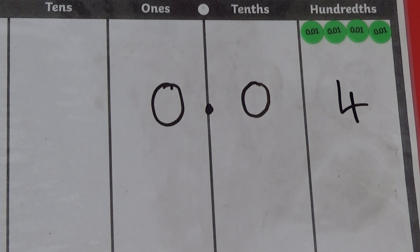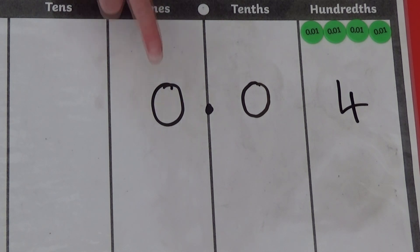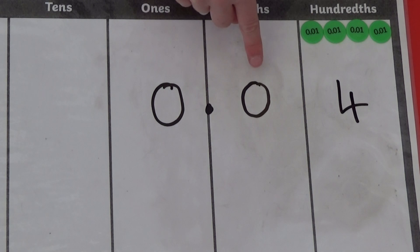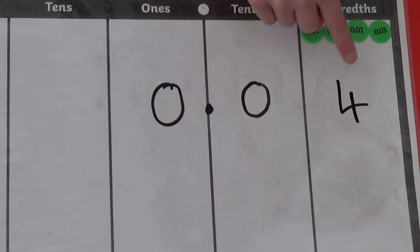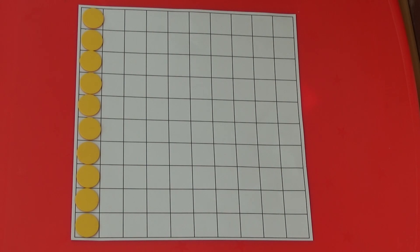If we look at the number zero point zero four, we can see it has no ones, no tenths and four hundredths. If we add another six counters, we are now showing ten hundredths.